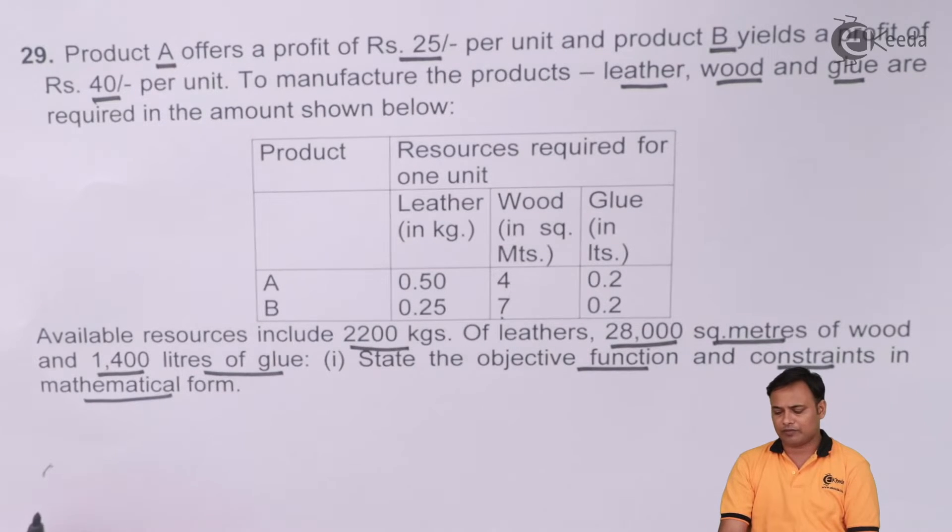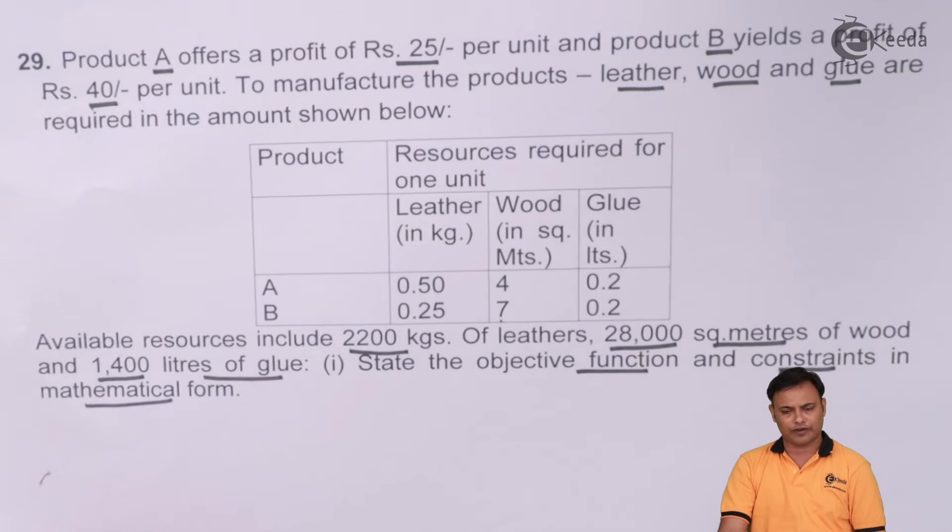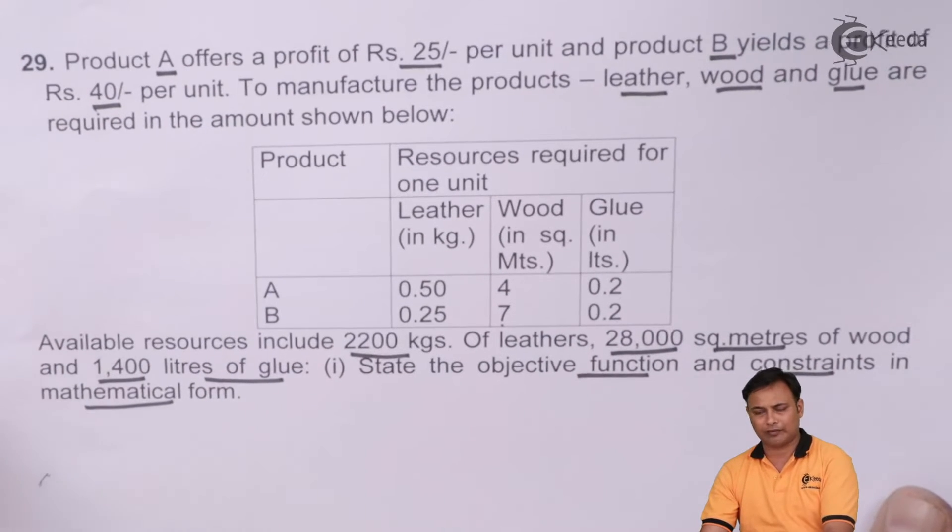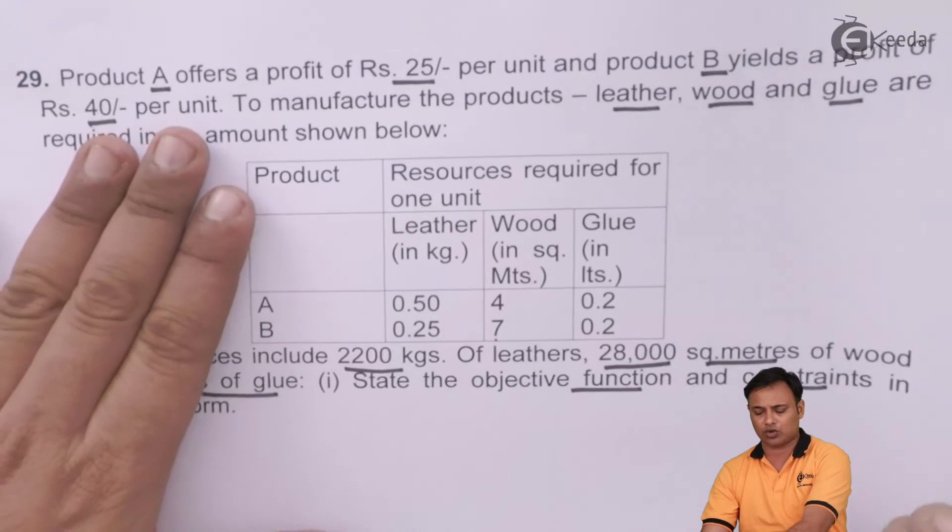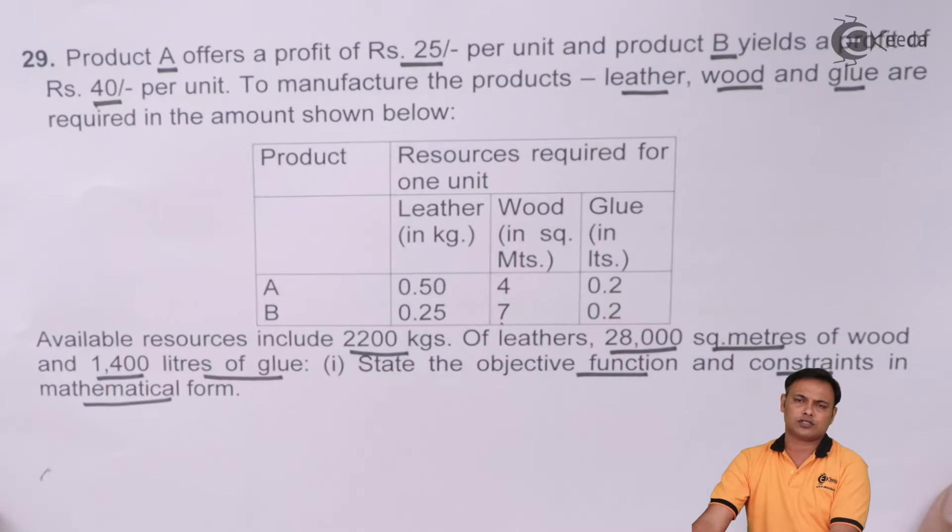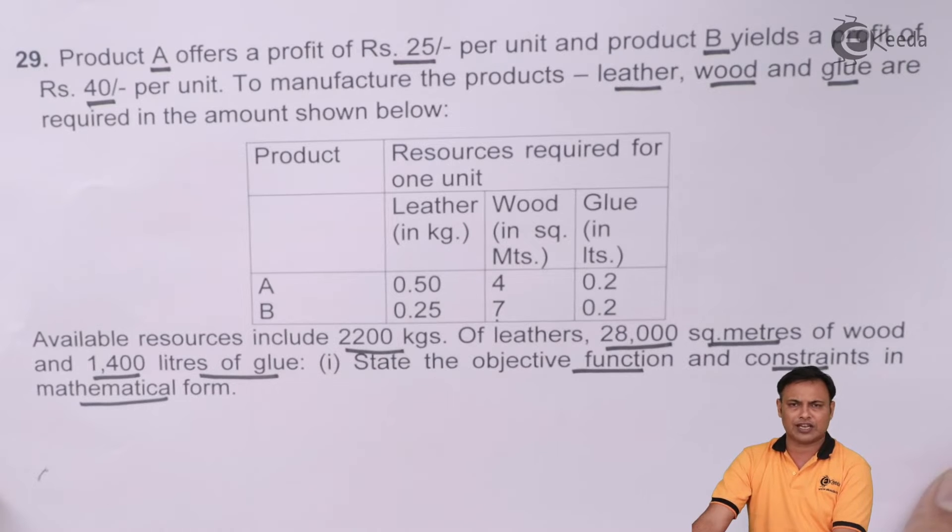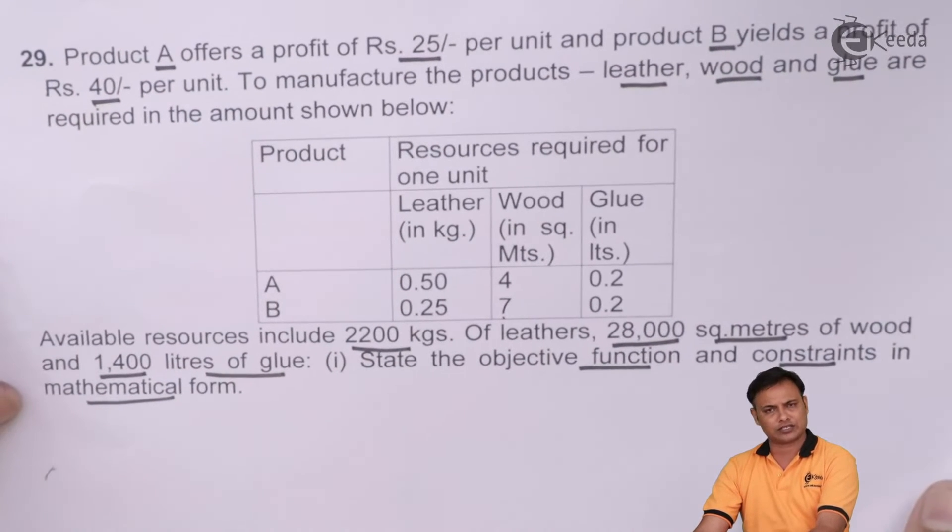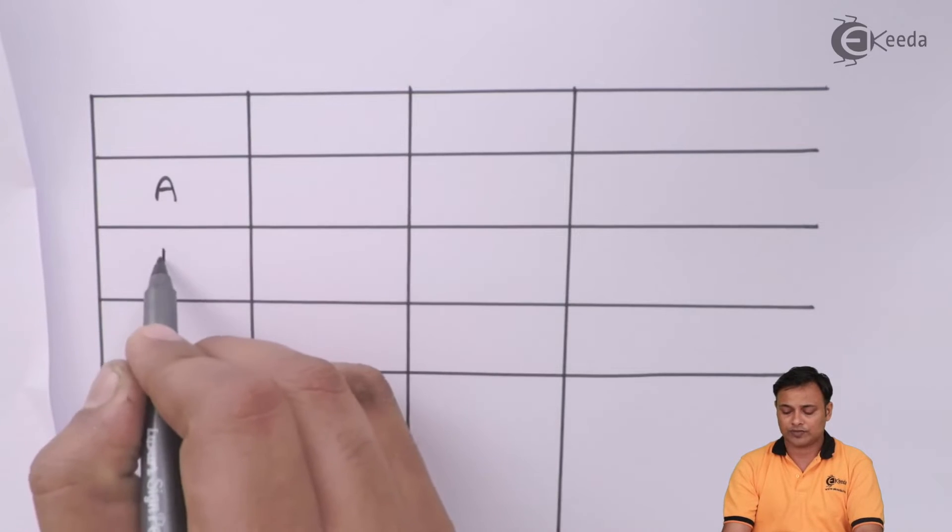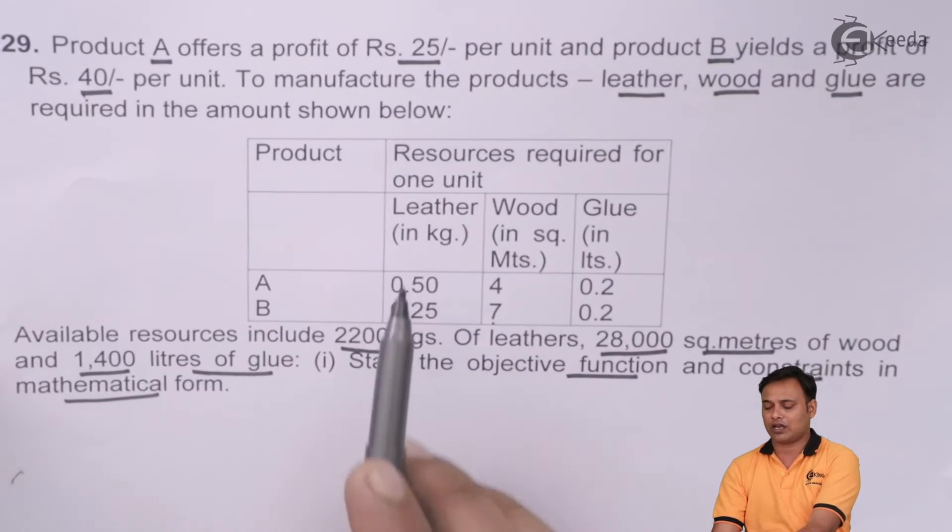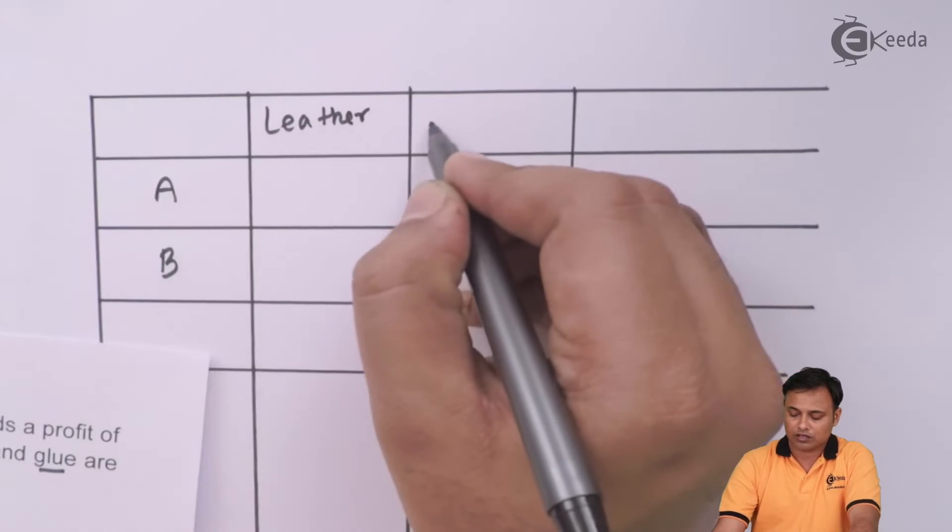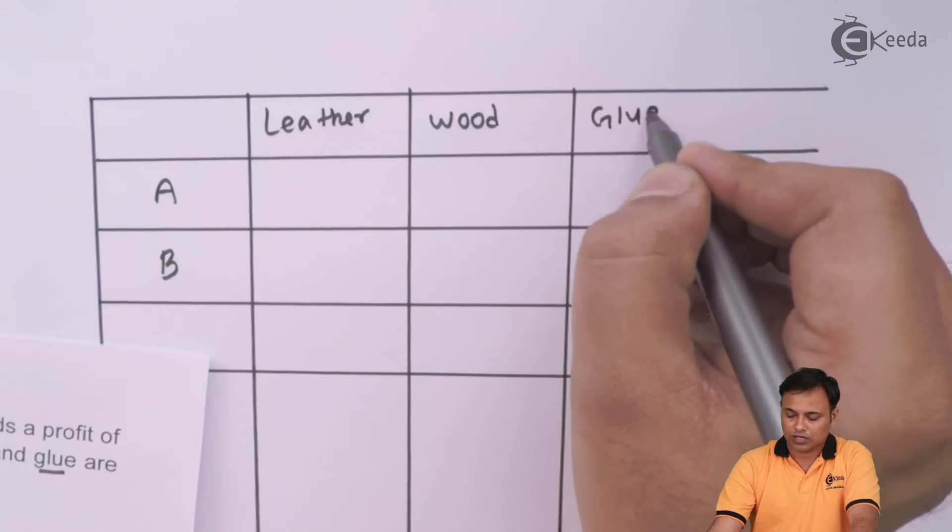Let's first make the table again. We need to put the resources and the supply and the profit in the table. We'll put the products in the rows in this problem. It won't make any difference if you put products into the rows. The only thing is that you need to look carefully when formatting the constraints. Right now I'll just put product A and B. Here is my product A, here is my product B. And my resources are leather, wood and glue.